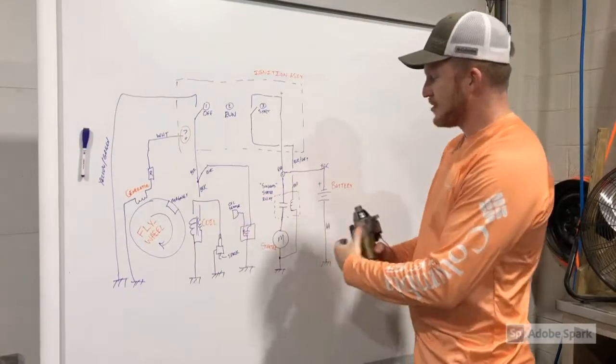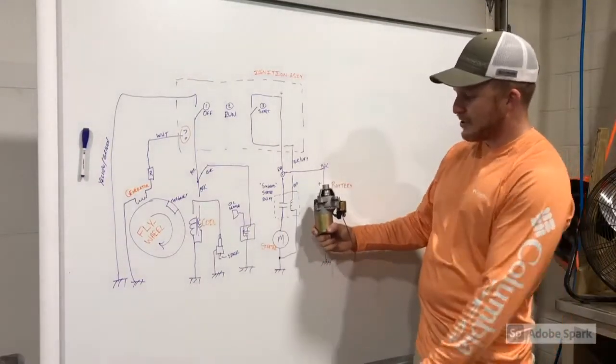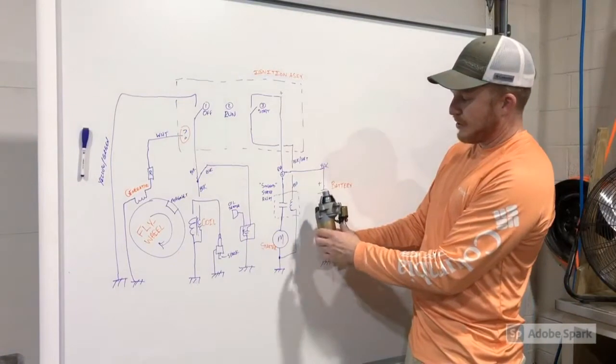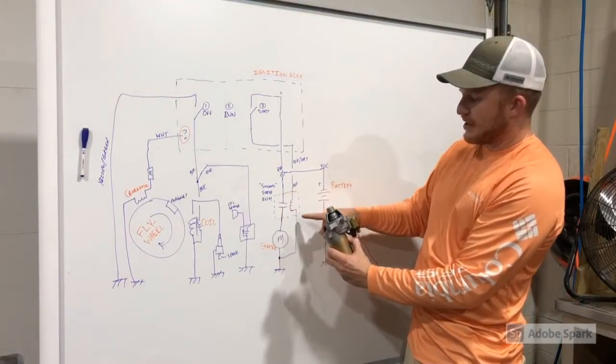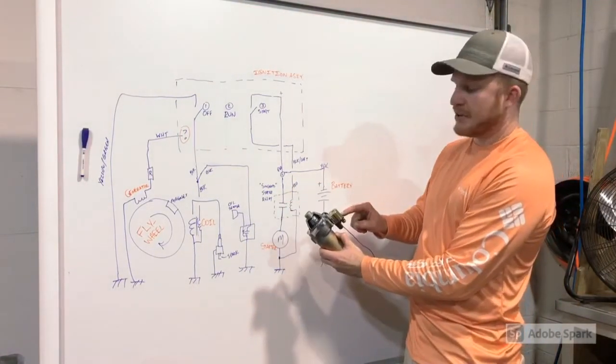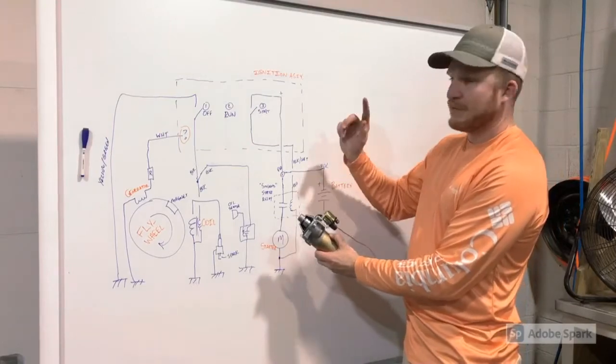The next component is over here on the right-hand side is the starter. So this M represents the starter motor and this little dotted region represents the solenoid, which gets the signal from the ignition assembly.